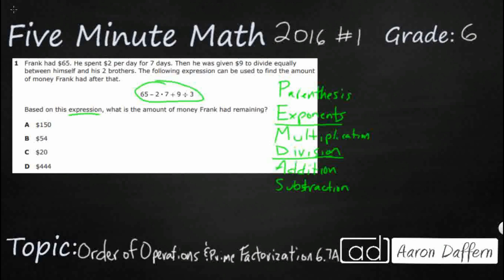So there's no parentheses. There's no exponents. But we do have some multiplication. We've got 2 times 7. We do have some division, 9 divided by 3. So we're going to use that. And we're going to simplify. Let's do it one at a time. So I'm just going to put some parentheses here so we can kind of see what we're doing.